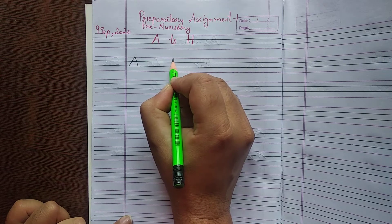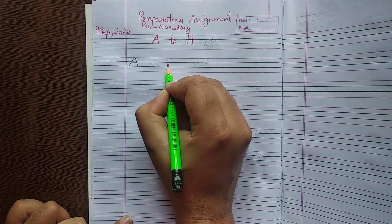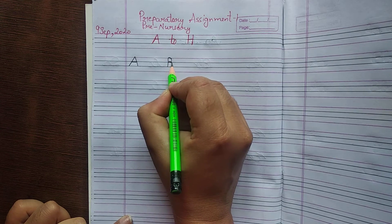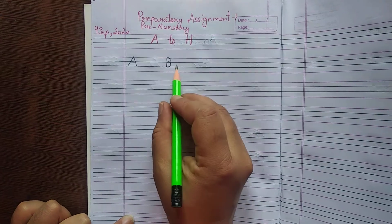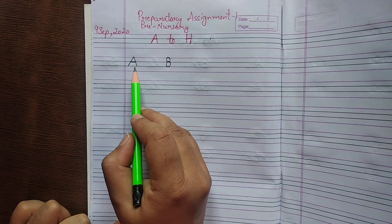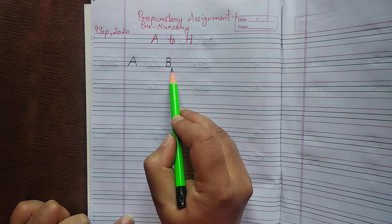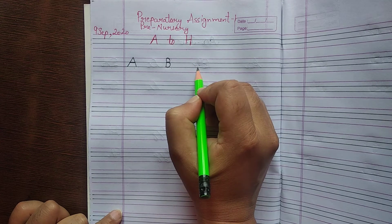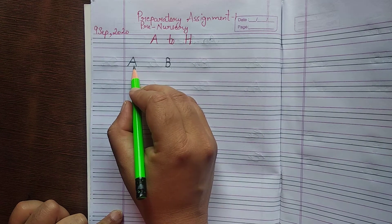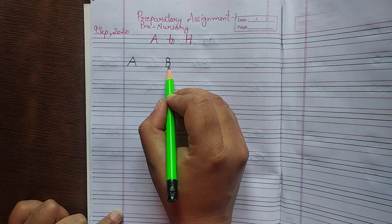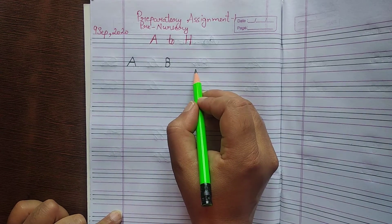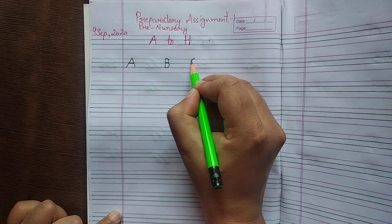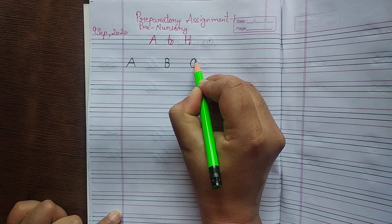Next, B for ball. C for cat. A for apple. B for ball. C for cat. What is the name of C? C is the name of C. C for cat.